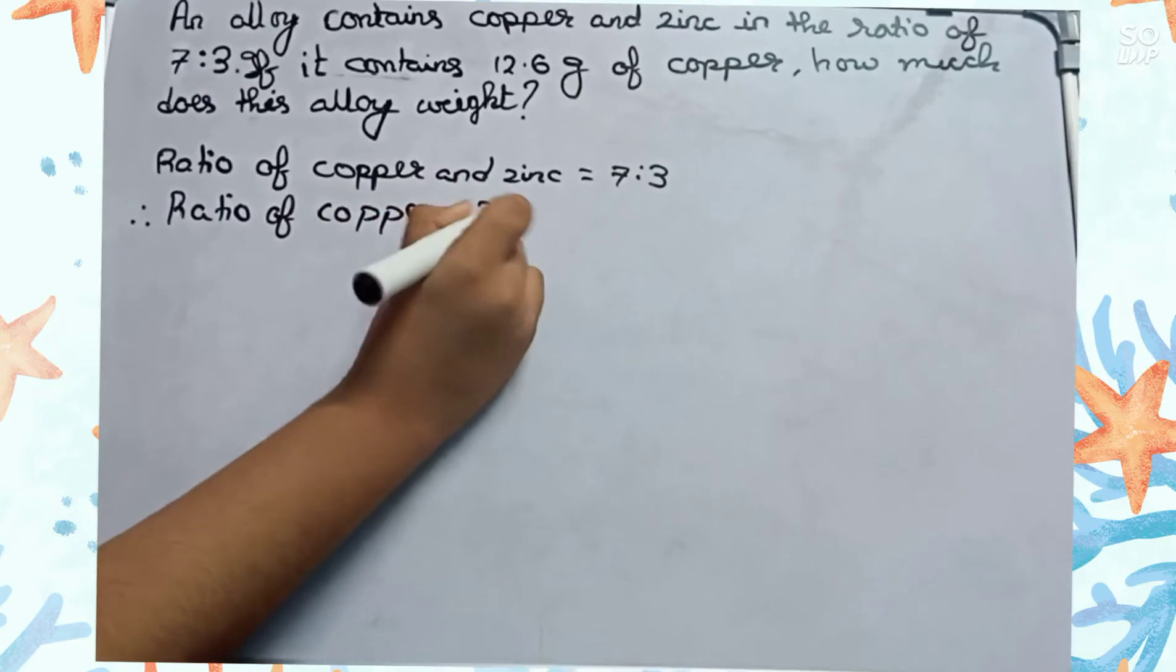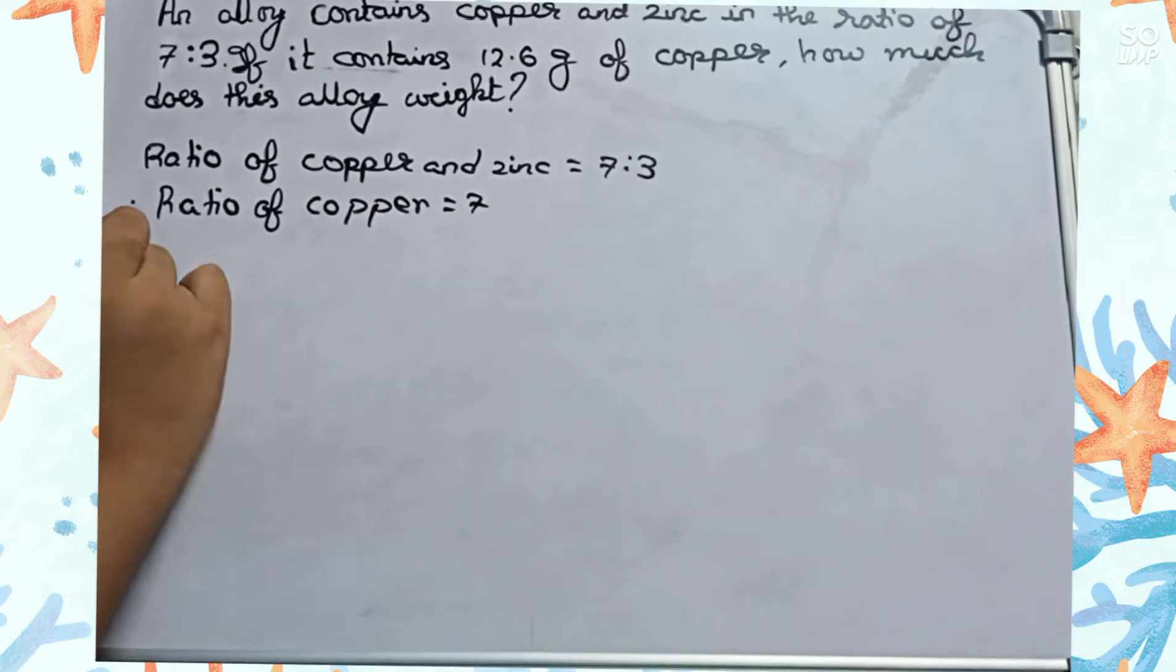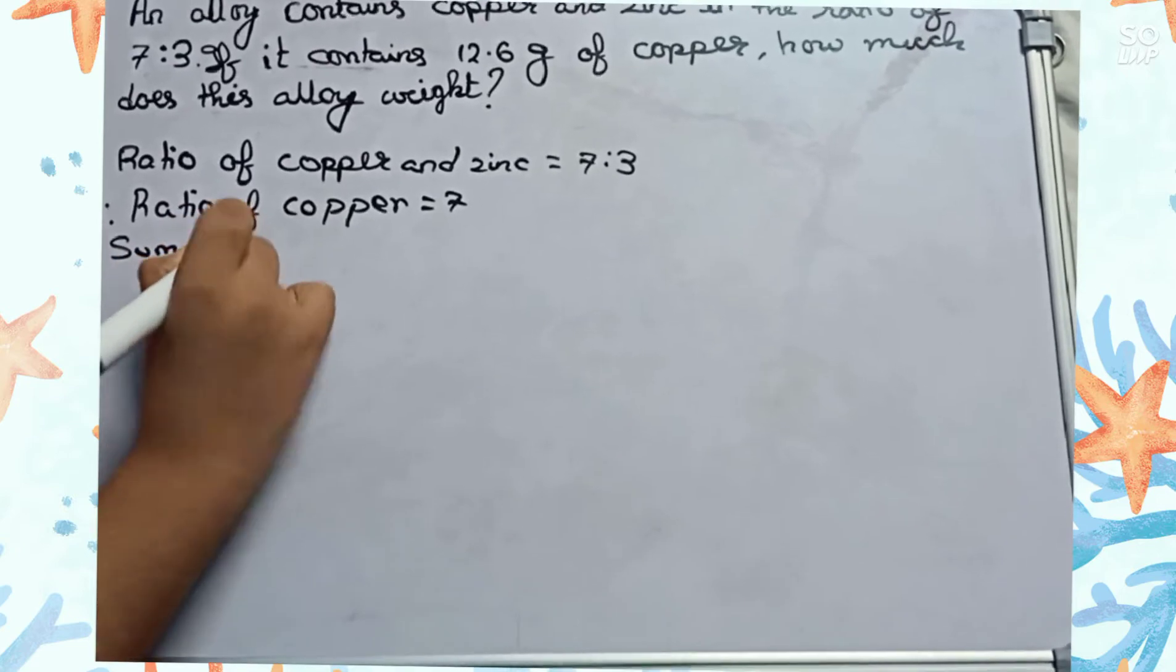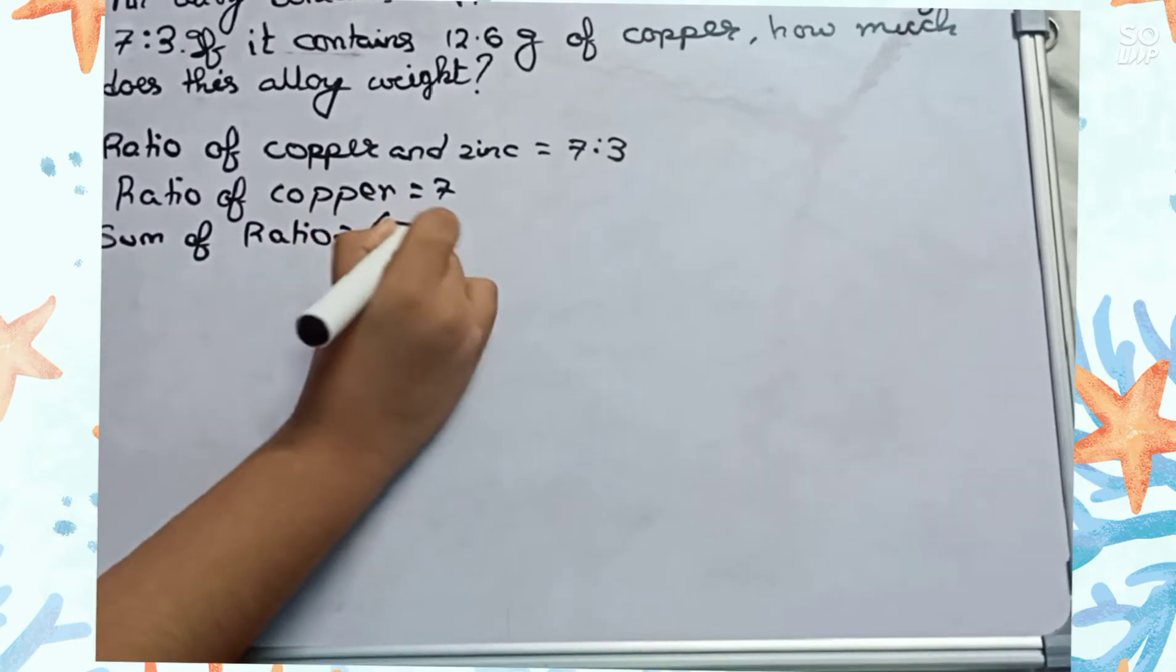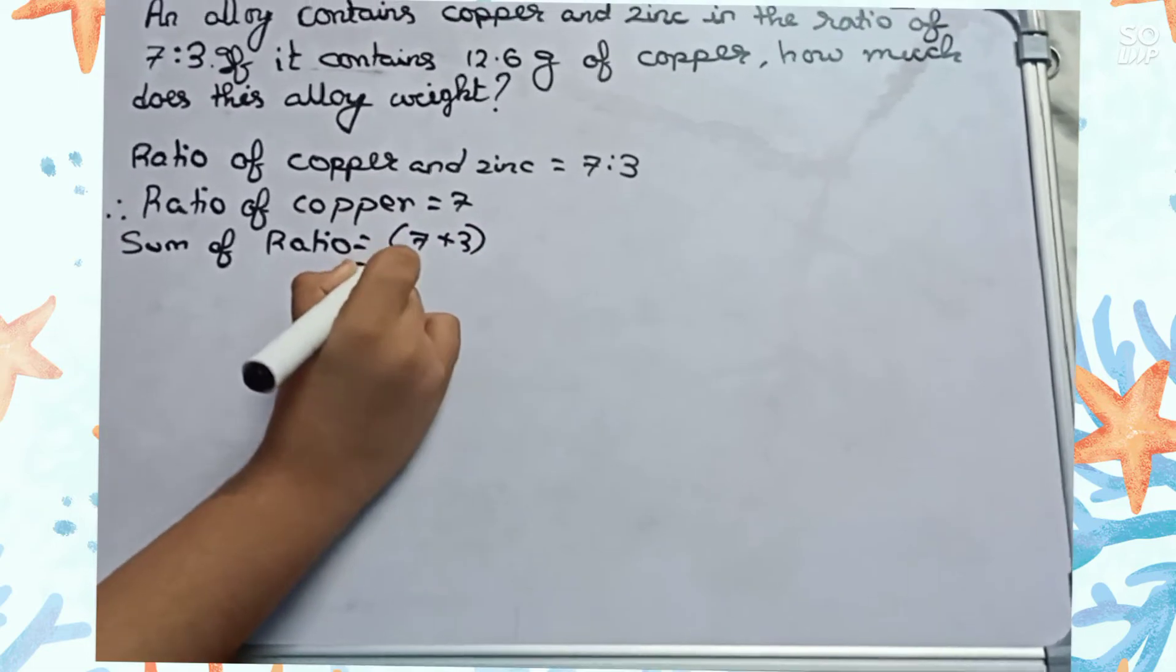Now we will find the sum of ratios equals to 7 plus 3, it will become 10.